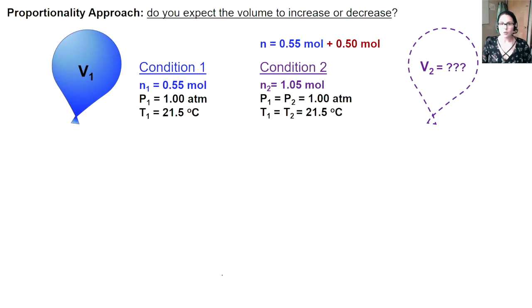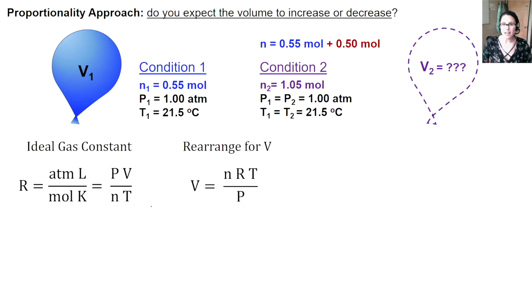Here, we're going to utilize our understanding of proportionality between our variables of amount of moles N and volume V. Let's start by thinking about our ideal gas constant R, 0.08206 atmospheres liters per mole Kelvin. The units translate directly to help us derive the ideal gas equation. R equals PV over NT. Next, let's rearrange for volume because volume is what we're interested in. V equals NRT over P.